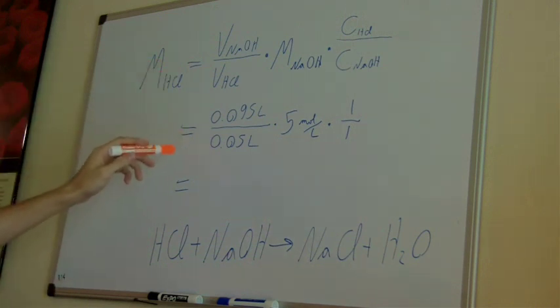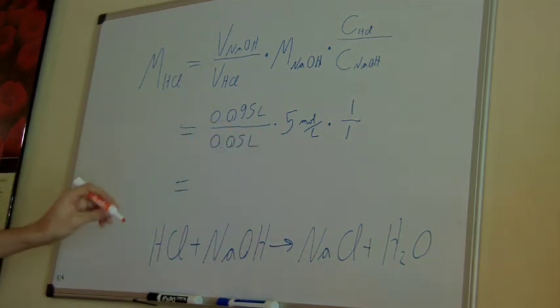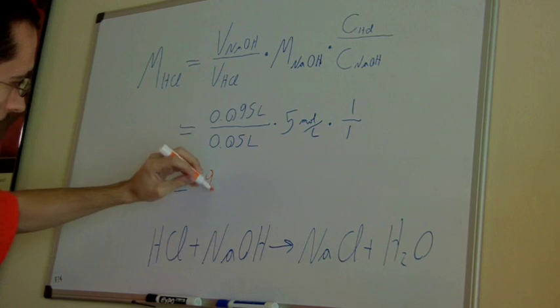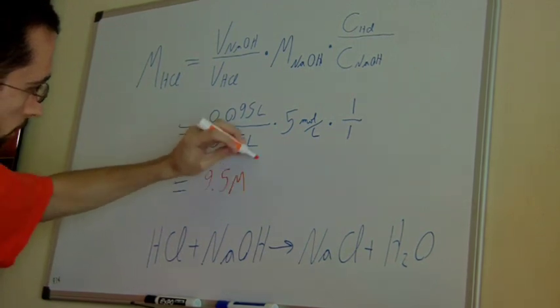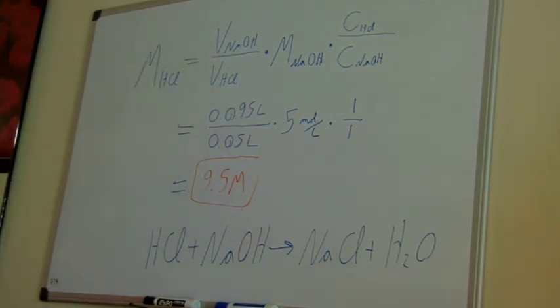The volume of sodium hydroxide I used was 95 milliliters. The volume of HCl I started with was 50 milliliters. And the concentration of sodium hydroxide was five moles per liter. And that leaves me with 9.5 molar hydrochloric acid solution.